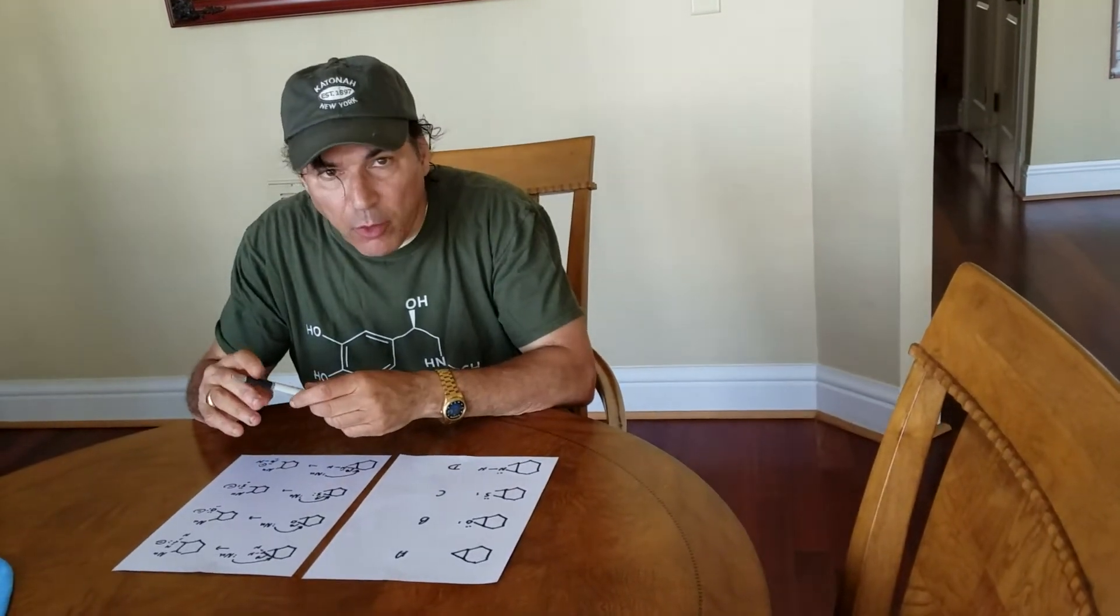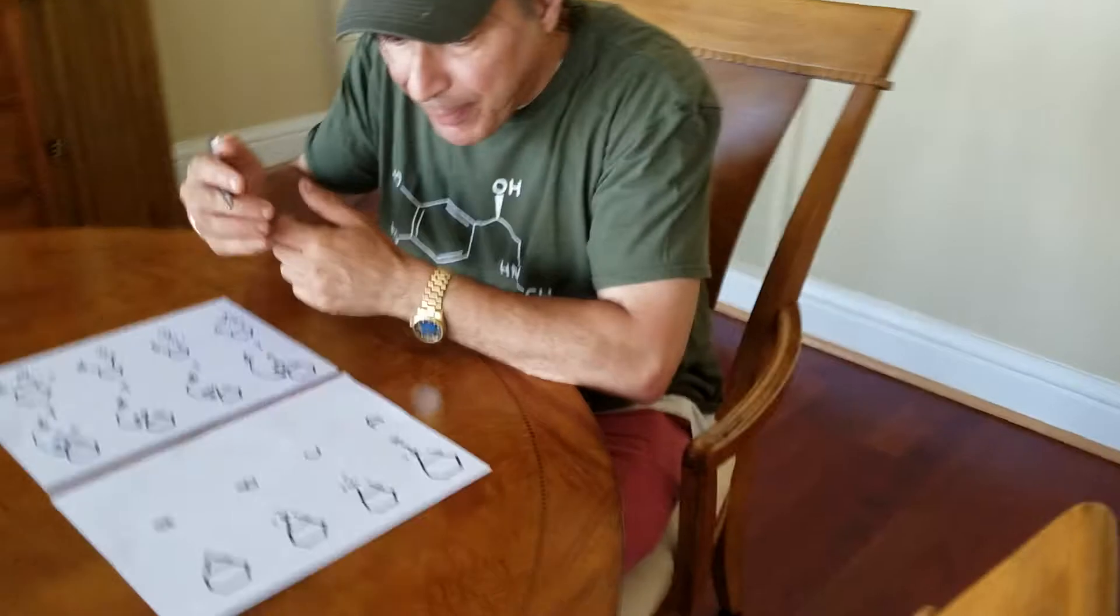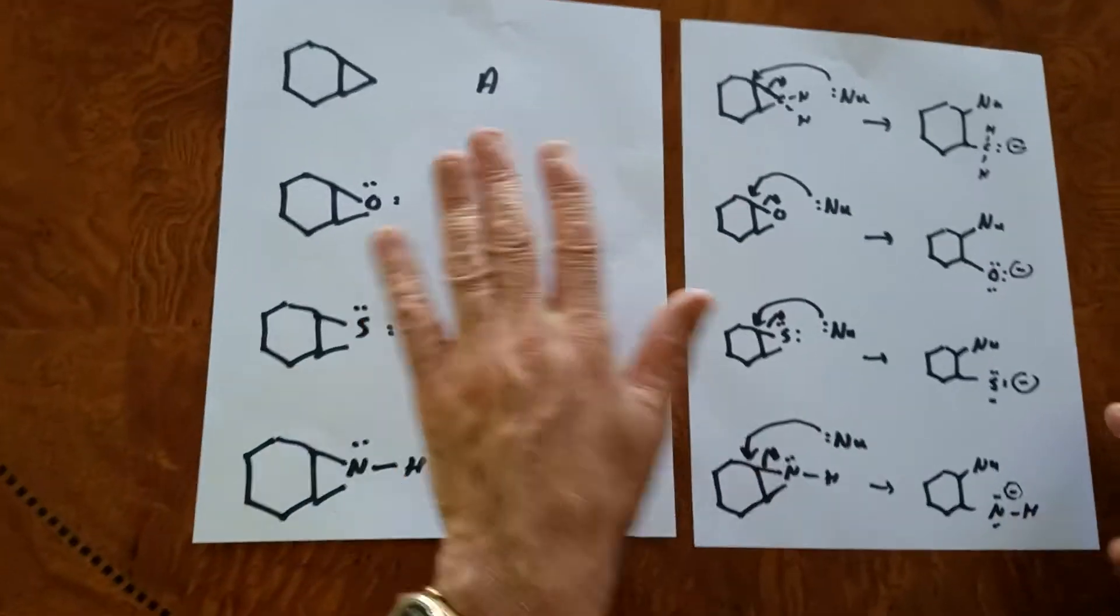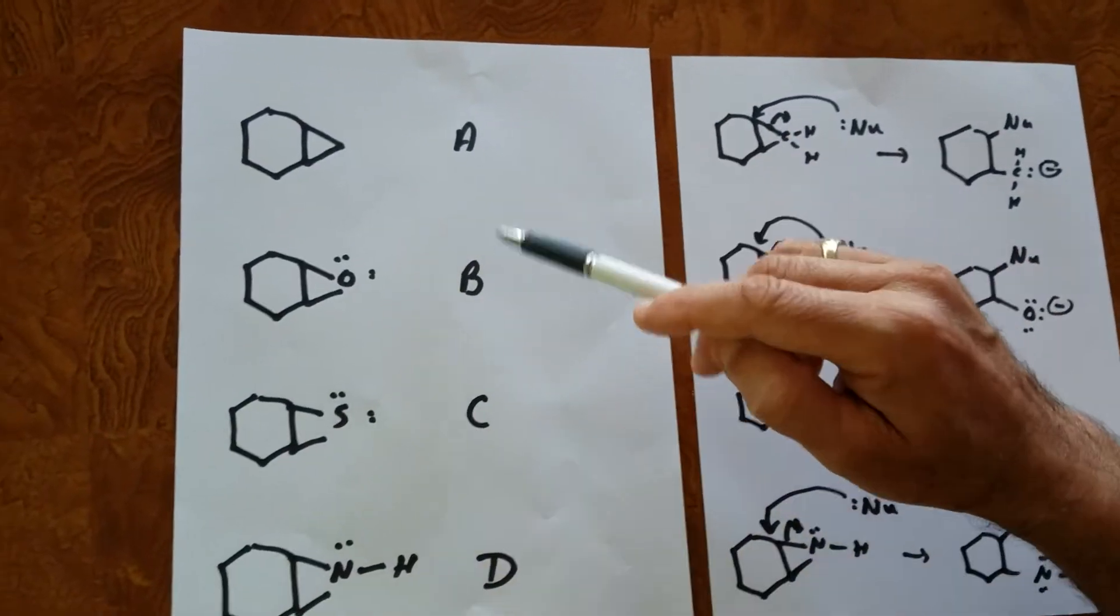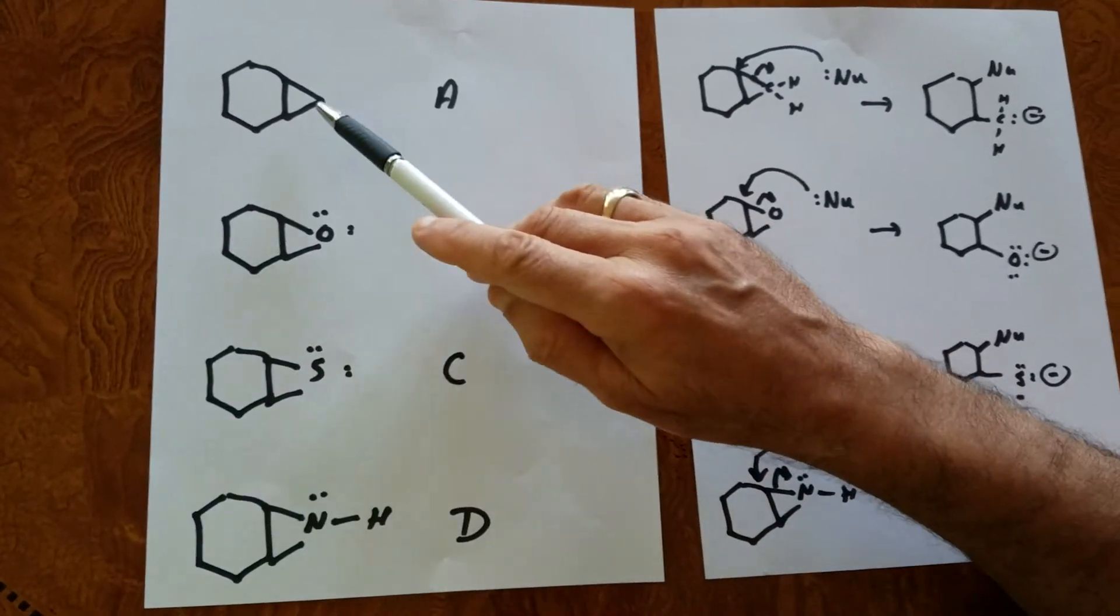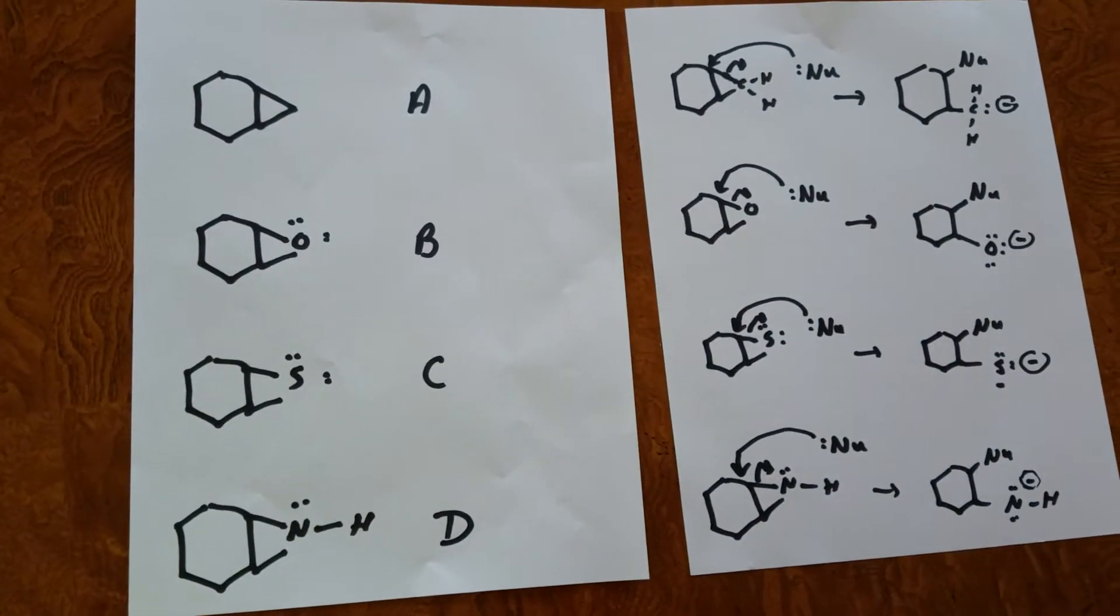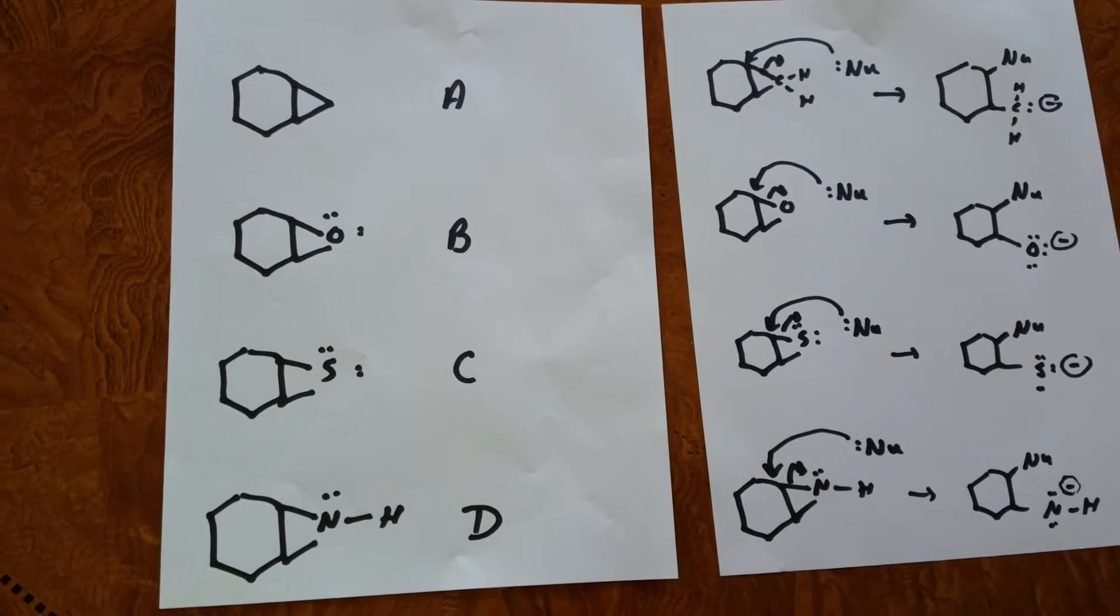What I wanted to know is which one of these compounds A, B, C, or D is going to open up the fastest if we treat it with a nucleophile.